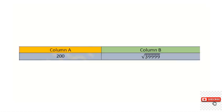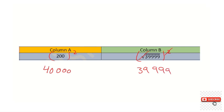Question number 12: is 200 greatest or root 39,999? Square both sides: 200 squared is 40,000. Squaring root 39,999 cancels the root, giving 39,999. Of course 40,000 is the first and greatest value, so 200 is greater.